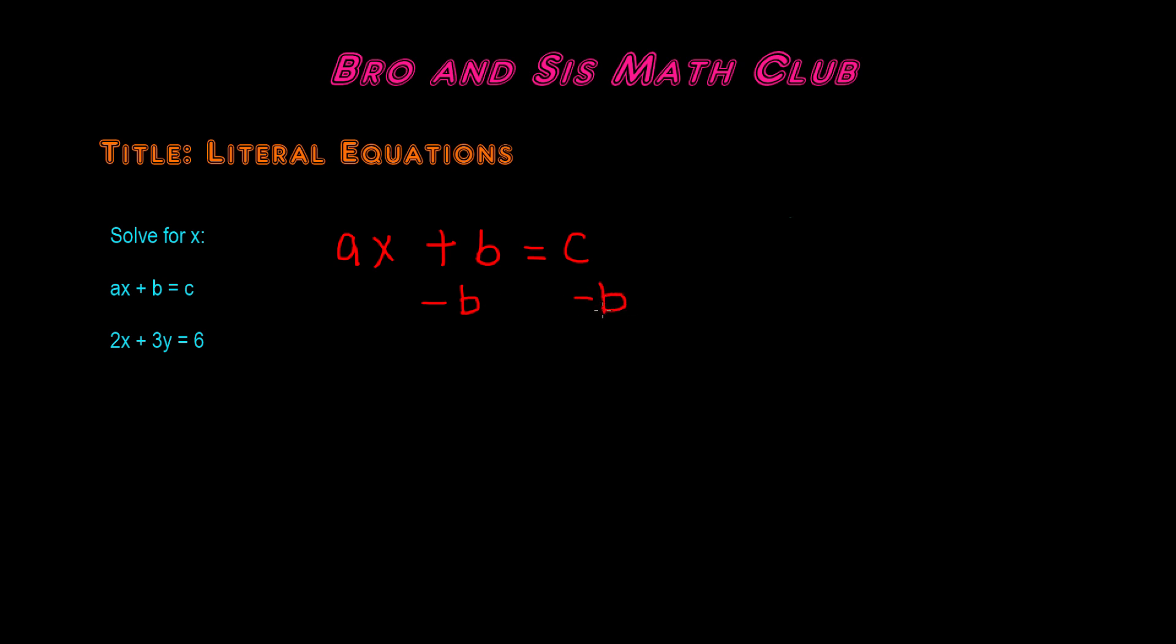So subtract b on both sides. And we're left with ax is equal to c minus b because the positive b and negative b cancel each other out.